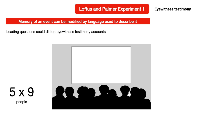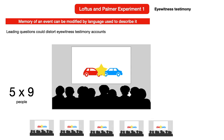Each group was shown the same short piece of film, which showed two cars on a road coming together in an accident. After seeing the film, the audience were asked: 'About how fast were the cars going when they [verb] each other?' — using a different verb for each group.